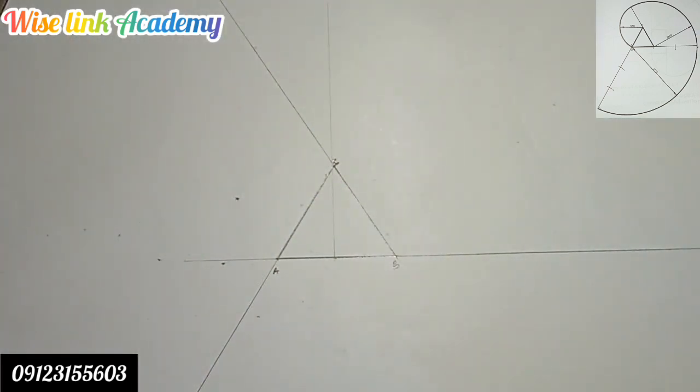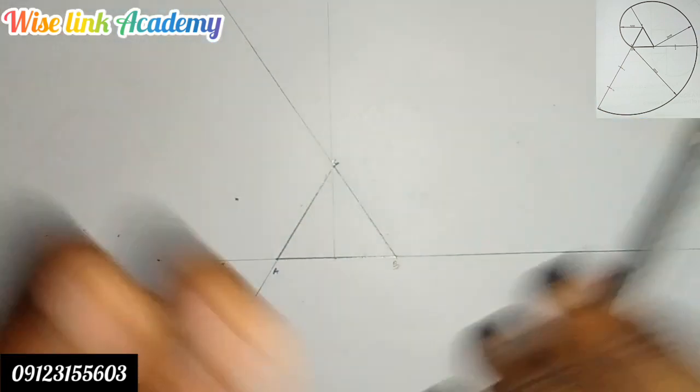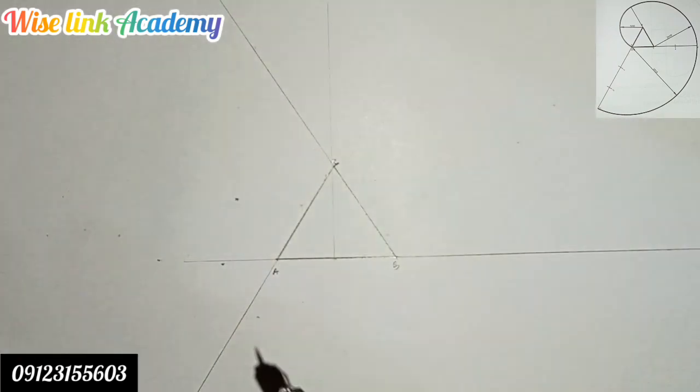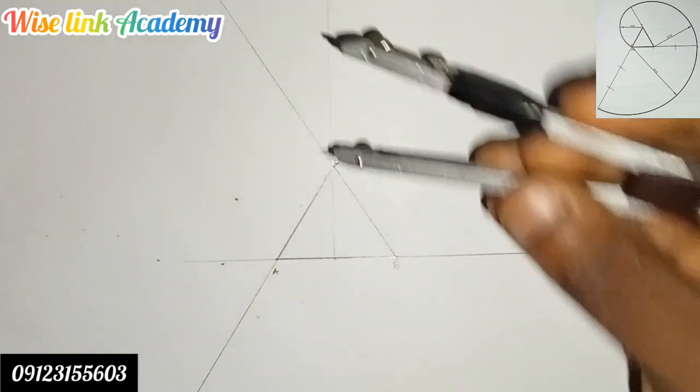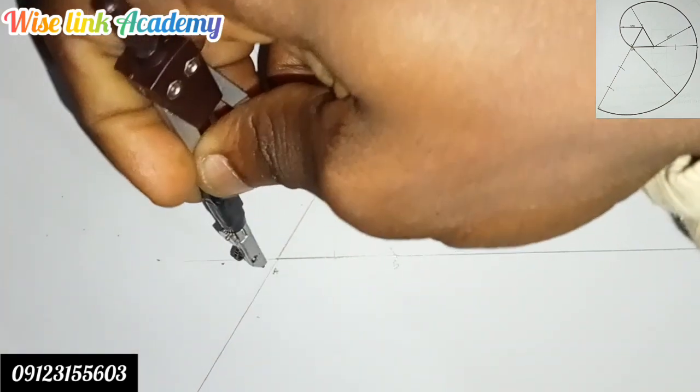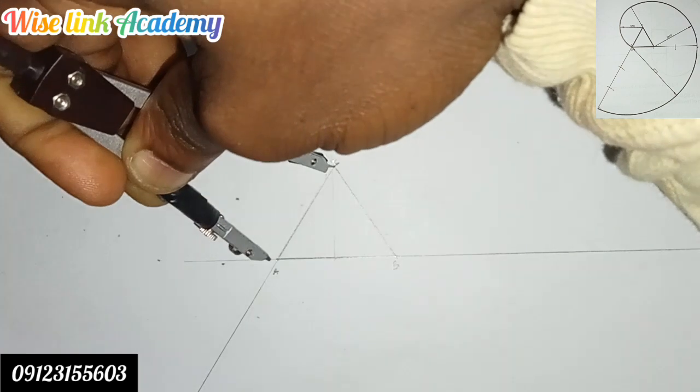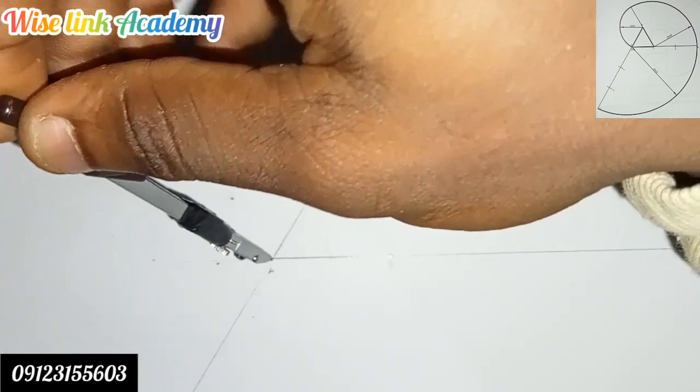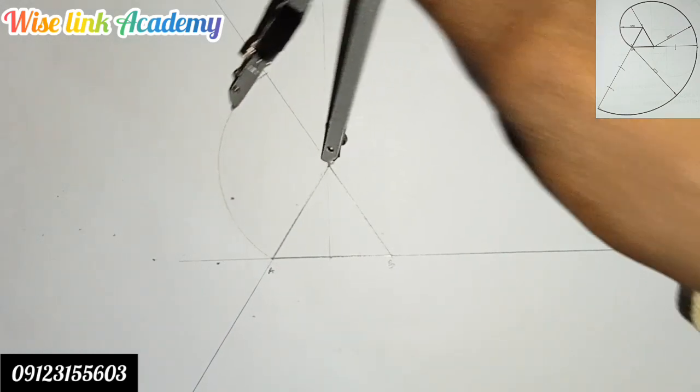The next thing to do is take your compass. Measure the distance from point C to point A. You draw an arc touching that line.